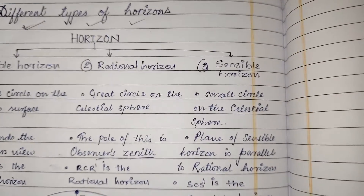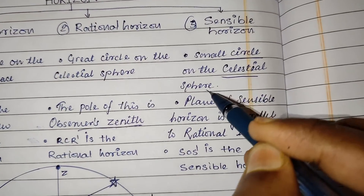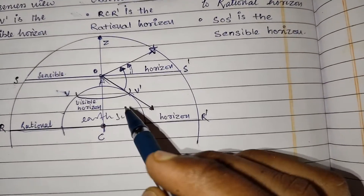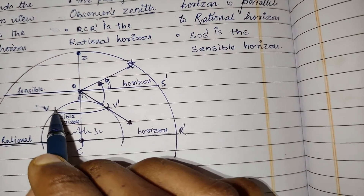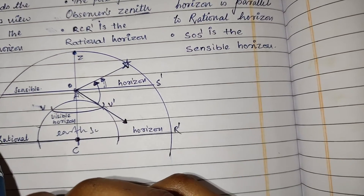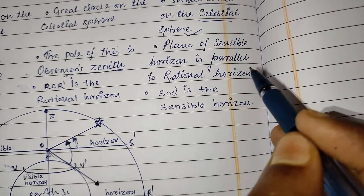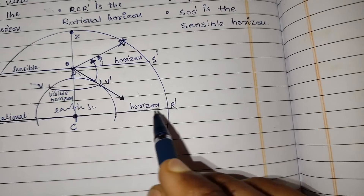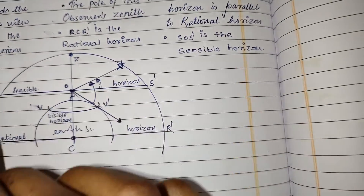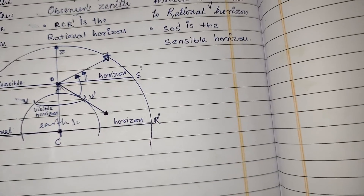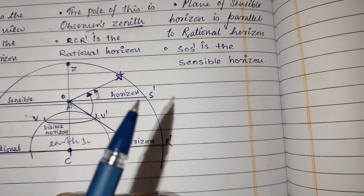Now sensible horizon. Sensible horizons are small circles on the celestial sphere, while visible horizon is a small circle on earth's surface. The plane of the sensible horizon is parallel to the rational horizon. As you can see in this picture, SOS dash is the sensible horizon.